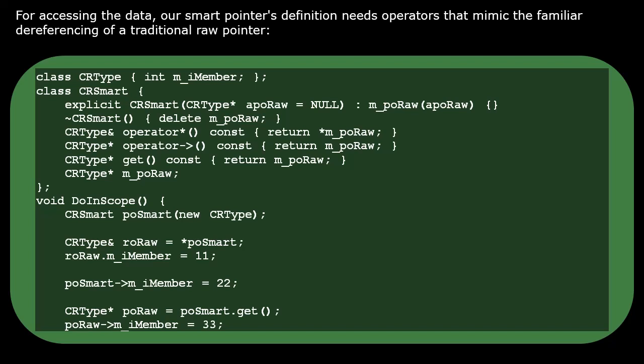The smart pointers built into C++ are templated, using a template parameter as a generic placeholder for this CR type.